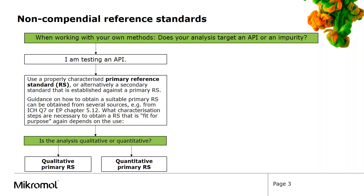Do you want to identify the API or do you want to quantify it? For identification, a qualitative reference standard with a simple purity estimation by HPLC is sufficient, while a quantitative primary reference standard requires an accurately assigned assay. We will have a closer look at that on the next slide.